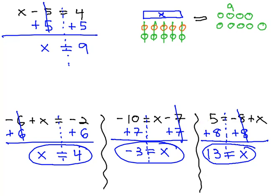We can get x alone getting rid of the negatives by introducing positives on both sides of an equation.